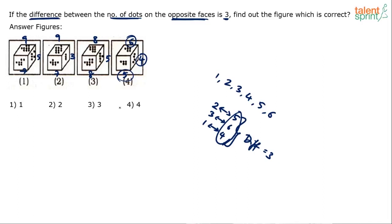So option 4 has to be the answer. To clarify the opposite pairs: 5 should be opposite to 2, 4 should be opposite to 1, and 6 should be opposite to 2. These are the correct opposite face pairs satisfying the difference-of-3 condition.